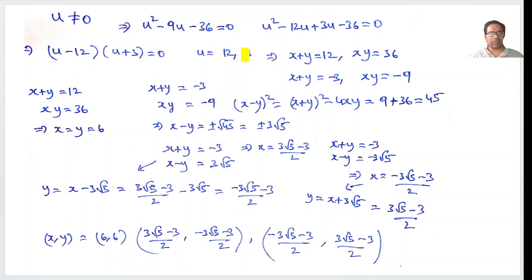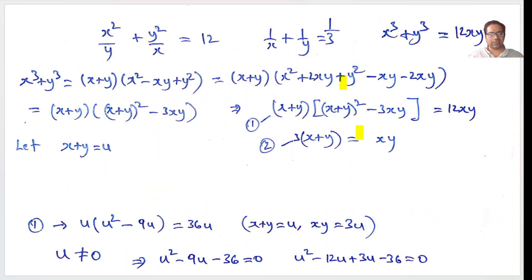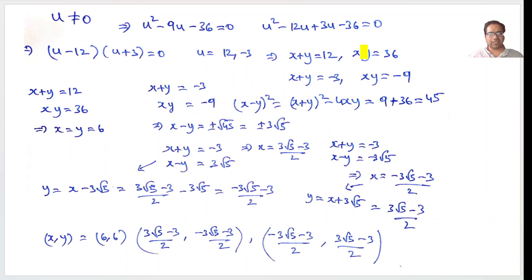That means u is either 12 or minus 3. Since u equals x plus y, we get x plus y equals 12 or x plus y equals minus 3. And since xy equals 3 times x plus y: if x plus y is 12 then xy is 36; if x plus y is minus 3 then xy is minus 9. Now we know x plus y and xy in each case, so it is a cakewalk from here.